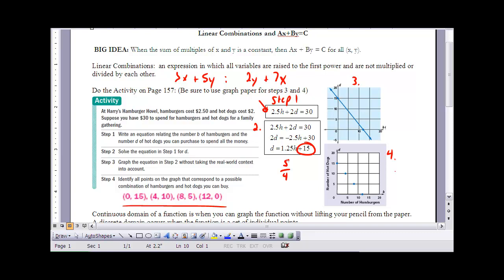And then step 4, it said to identify all the points that would be on that line that are actual possible combinations for those hamburgers. Well, the only possible combinations are the ones where we have integers for our values. So these are the four possibilities that you could get and still have a total of $30 spent at Harry's Hamburger Hobble.